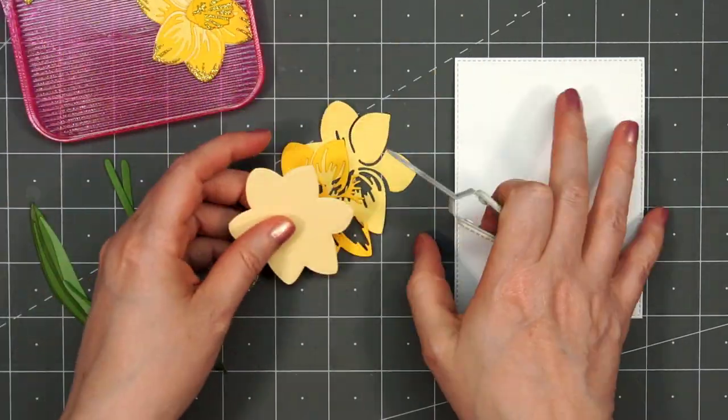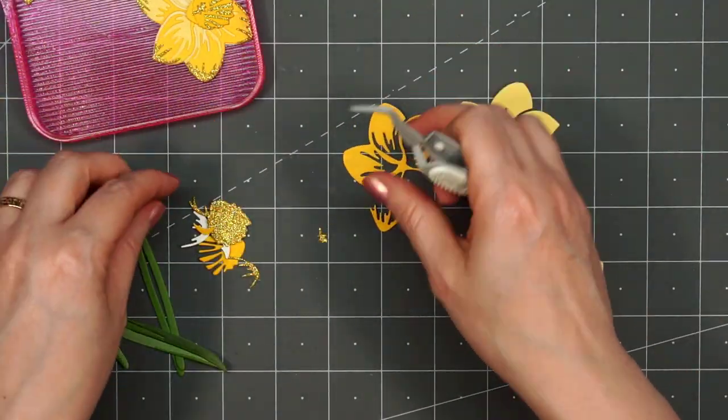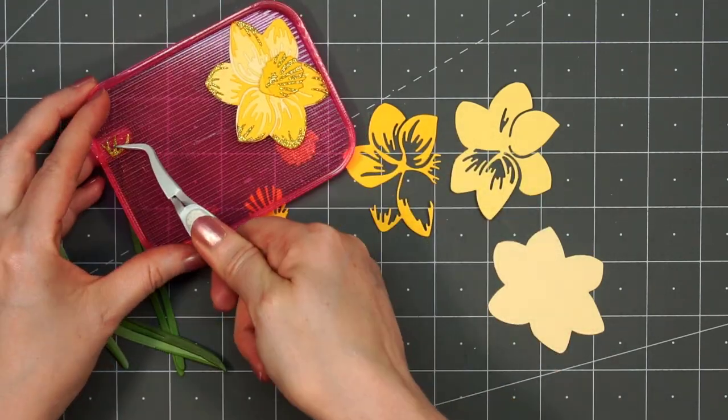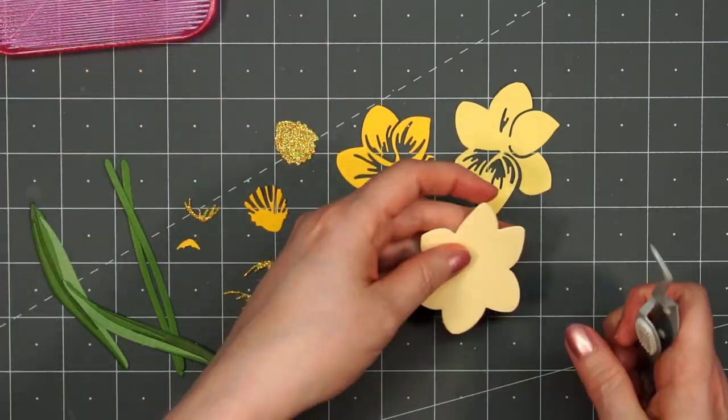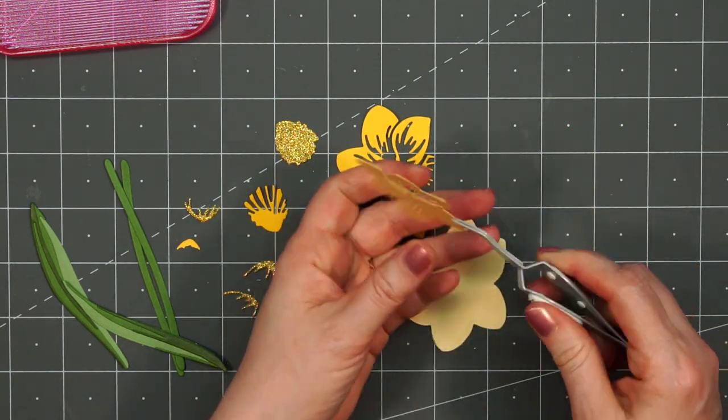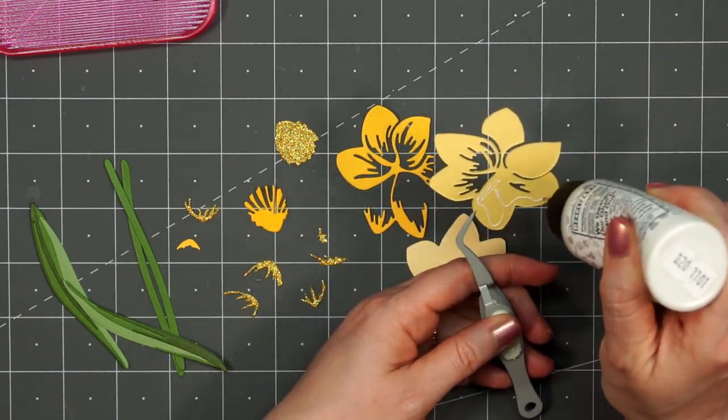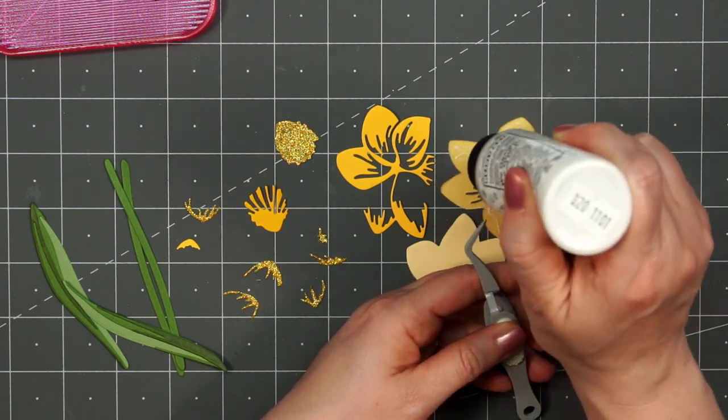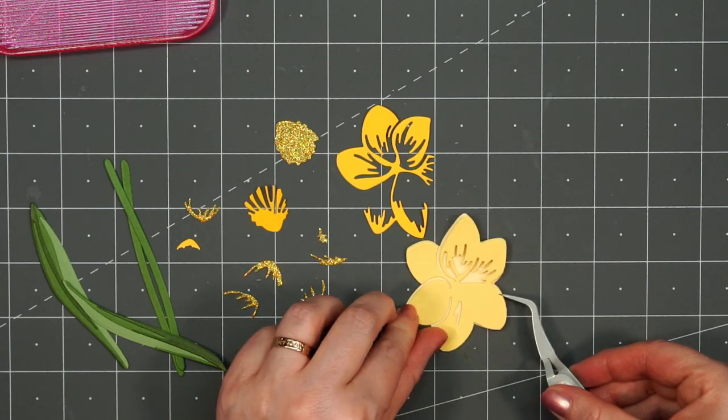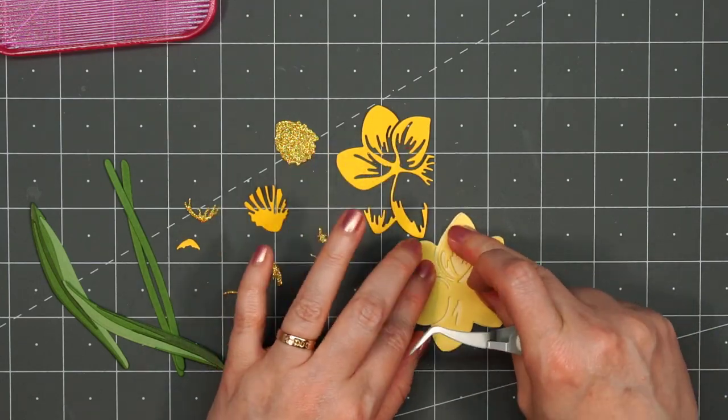For the flower, there are several different layers. I think there's at least six or seven. I have three different shades of yellow. I'm also using some yellow glitter paper. I have the lightest yellow for the background. I'll put some liquid adhesive on the back of each of the pieces, layer them together, and start creating my flower.